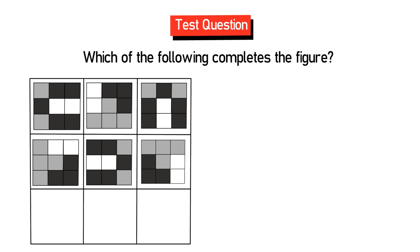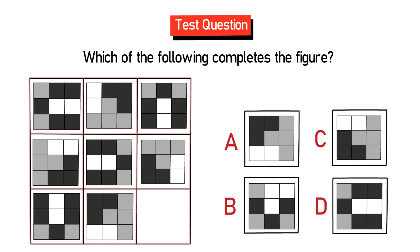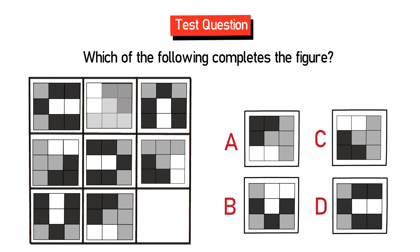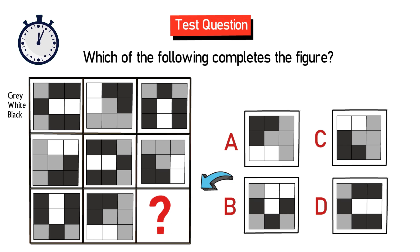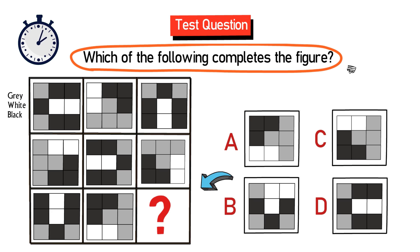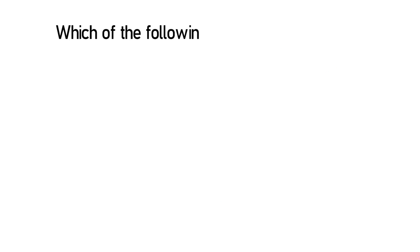Here's a cool question which started showing up on tests very recently. You are presented with a 3 by 3 matrix. Each square of the matrix contains another matrix inside with 3 by 3 small squares in different colors — gray, white, and black. One 3 by 3 square is missing, and you need to select from four possible choices — A, B, C, and D — to determine which shape completes the figure.